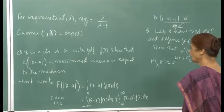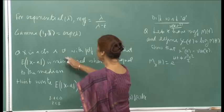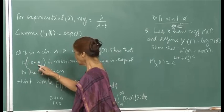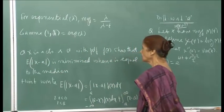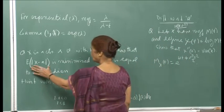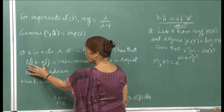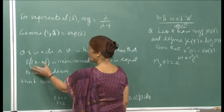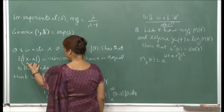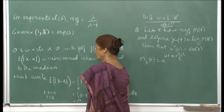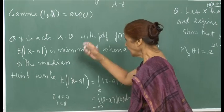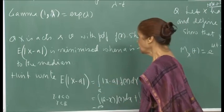Just two questions before finishing this topic. First: x is a continuous random variable with PDF f(x); show that E[|x − a|] is minimized when a equals the median. The expectation is a function of a, so you differentiate with respect to a to find the critical value and show it is the point where the area under the curve is half.